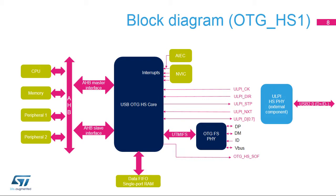In this block diagram, the USB-OTG high-speed controller core, HS1 instance, is shown in the center with its data FIFOs below. The FS physical layer, or PHY, on its right side handles the analog signal levels, including many specific level detections relating to on-the-go and battery charger detection functions. For high-speed operation, an external ULPI PHY transceiver can be connected to the HS1 core. The USB interrupt goes to the Cortex processor to signal various USB events. The AHB slave interface enables read-write access of the controller registers and the power and clock control block. Transfers to and from memory are handled by a DMA engine inside the controller via the AHB master interface.